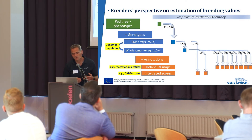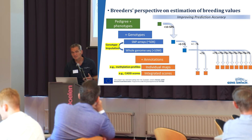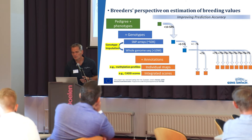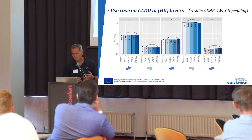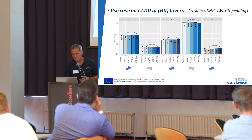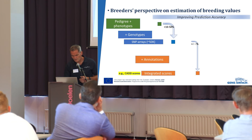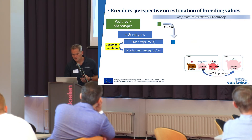CADD scores were initially developed for humans and take into account conservation of the genome, functional annotation, and gene expression — all in a single score. We evaluated how much accuracy we gain by adding these CADD scores to the 50k array. Looking at five traits in layers — this is poultry data, not GeneSwitch data — you can see from the arrows at the bottom: adding CADD scores increases accuracy for breaking strength and hatchability, but decreases for egg number and egg weight, and increases for survival. A very mixed pattern — the first results show only zero to five percent gain, so not a big boost.